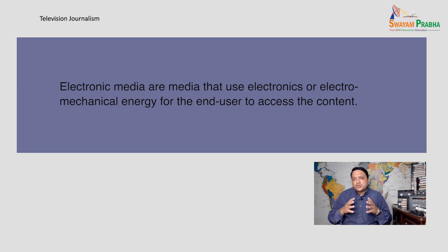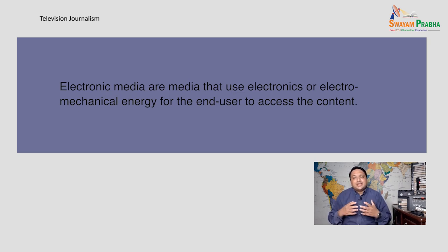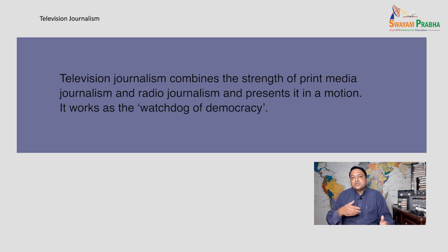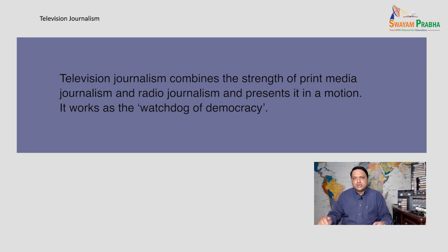This video concentrates only on television journalism, in which we will try to understand how a newsroom works, what its departments are and what is done in those departments. We will also understand the structure of a news bulletin in detail and towards the end, television anchoring. Television journalism combines the strength of print media journalism and radio journalism and presents it in motion, because it is an audio-visual medium. It deals with imparting impartial, accurate and objective reporting of events, sharing the same common journalistic values as print journalism.